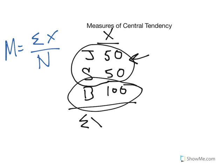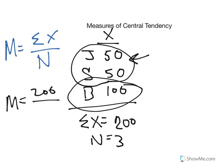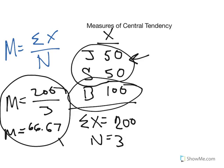So let's go ahead and calculate it. The sum of X is equal to, let's see, 100 plus 50 plus 50 is 200, and N equals 3. So the mean is equal to 200 divided by 3. And if we actually take 200 divided by 3, we'll get about 67-ish. So this is our mean.